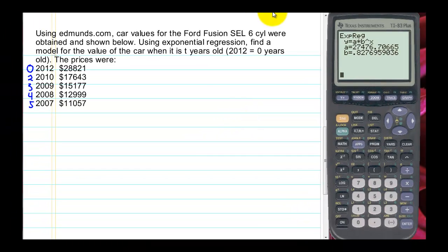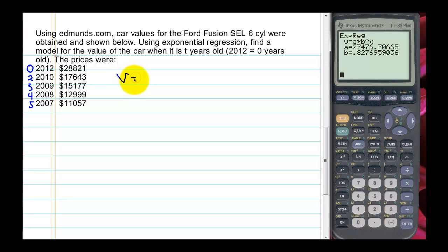So if we write that over here, our value, the Y value, is A, $27,477. And our B is about 0.828, if we round it, to the T years. So again, we could use this model by plugging in values of T to get the value at various ages.